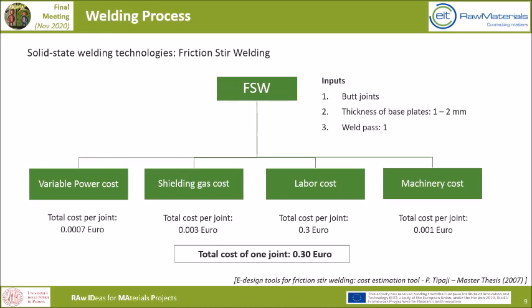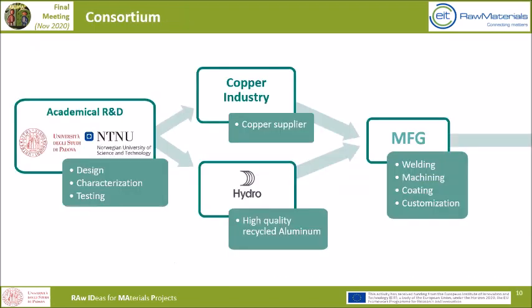As far as cost is concerned, this slide is part of the budget plan and is related to the process. We have some inputs: butt joints, the thickness of the base plates can vary from one to two millimeters, and we assume one welding pass. We can have variable power costs, shielding gas costs, labor costs and machinery costs. This is a rough estimation, and at the end the total cost per joint can reach roughly 0.3 euros. Now we go to the part that involves the resources flow involved in this problem.